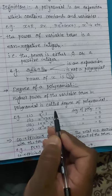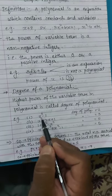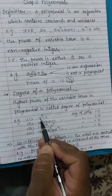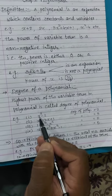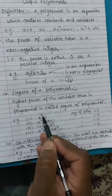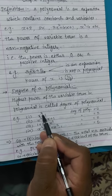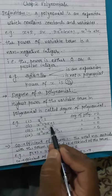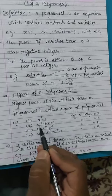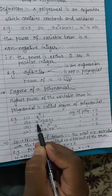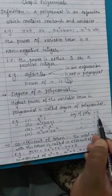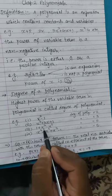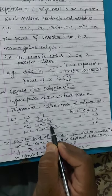Let us take some examples. First example: x squared minus 1 — the variable term is x and the highest power is 2, so the degree of the polynomial is 2. Second example: x cubed plus 3x plus x — the highest power of x is 3, so the degree is 3. Third example: 1 plus x cubed minus x to the 5 — the highest power of x is 5.